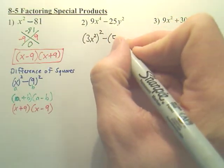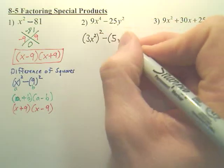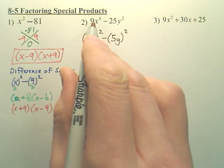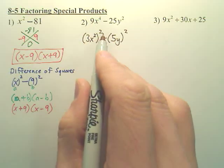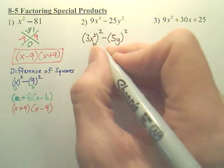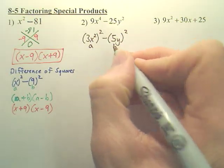And when you look at this one, what squared gives you 25? That'd be 5. What squared gives you y squared? That'd be y. So, the first piece, 3x squared, squared, is this. 5y squared is this. This is your a, this is your b.